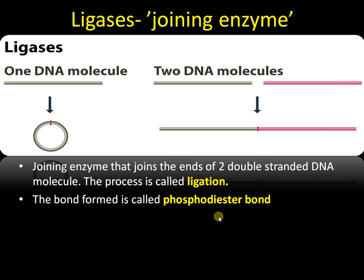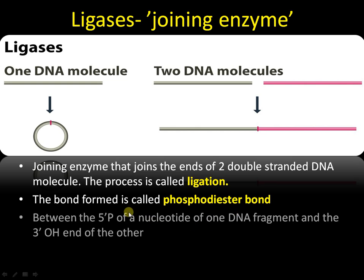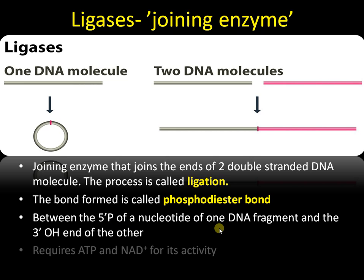The bond formed is the phosphodiester bond, the bond that is between two adjacent nucleotides. It is between the 5' phosphate of one DNA fragment and the 3' OH end of the other DNA fragment, and requires energy supply as ATP or NAD+. An example of a ligase is T4 ligase.